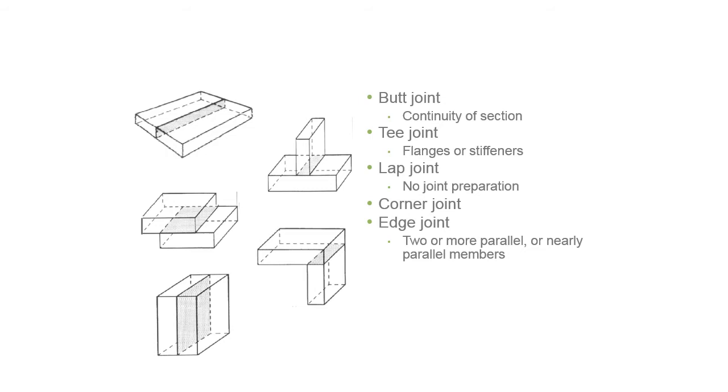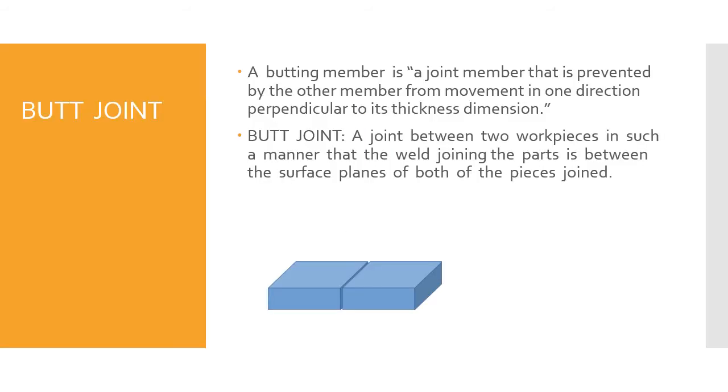A budding member is a joint member that is prevented by the other member from movement in one direction perpendicular to its thickness dimension. A butt joint is a joint between two work pieces in such a manner that the weld joining the parts is between the surface planes of both of the pieces joined.